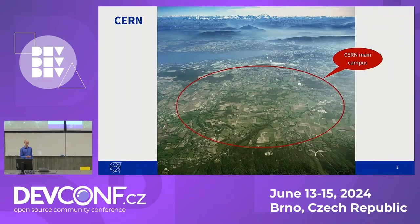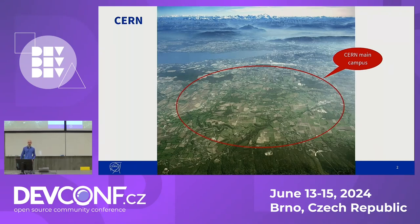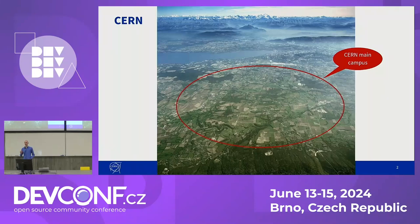But first, what is CERN actually? CERN is the European Organization for Nuclear Research based just outside of Geneva, right on the border between Switzerland and France. Below the ground we have this accelerator called the Large Hadron Collider, which is in fact the largest machine in the world that we use to accelerate tiny, tiny particles almost to the speed of light.